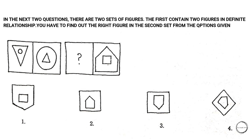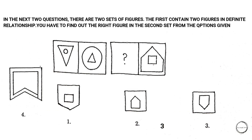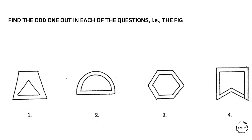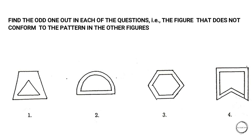In the next analogy question, in the first figure there is an upside-down triangle with a circle in it, and in the second there is a circle with a triangle inside it. The answer is three because the house is inverted and is inside a box. Next: find the odd one out — the figure that does not conform to the pattern in the other figures. The answer is one because both figures are not the same.